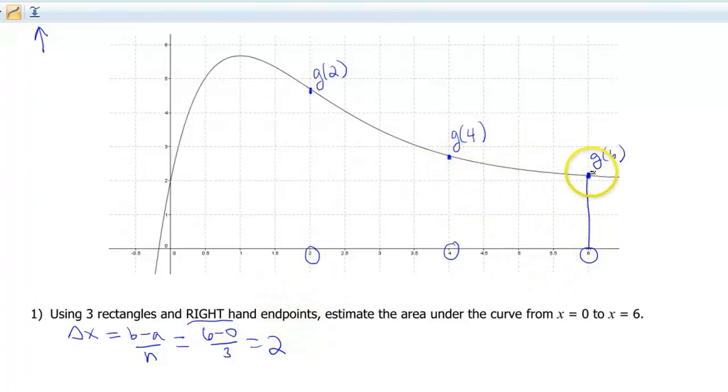So my rectangle here at g of 6 is going to look like about that. That'll be one of my rectangles. Then I'm going to pop up here at g of 4, and that will be my other rectangle. I'm pretending these are actually straight. And then this is going to be my last rectangle up here. So it looks like I'm a little bit above the curve here, but otherwise I'm below. This is below, this is below, and this is below. So this is probably going to be an underestimate.